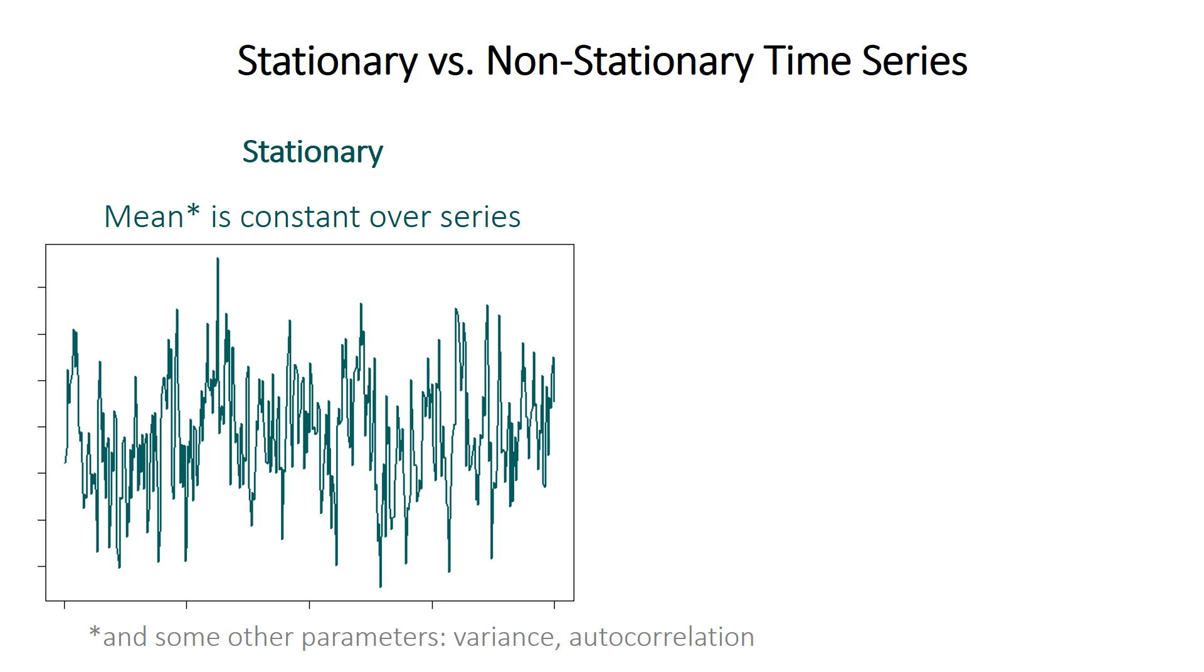So time series is called stationary, using it in the wide sense of the term, if its mean and some other parameters that are less important for us here, is constant over the series. Now, this time series is stationary because even though you can see the values are fluctuating, they go up and down, they zigzag around, but there's no long-term trend in the average or mean value of this time series.